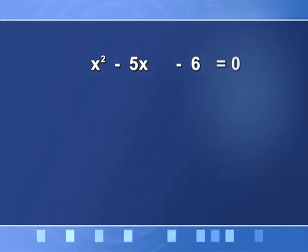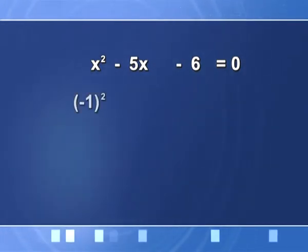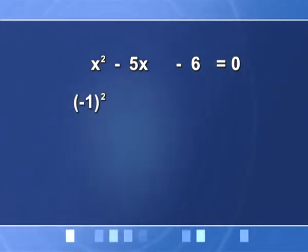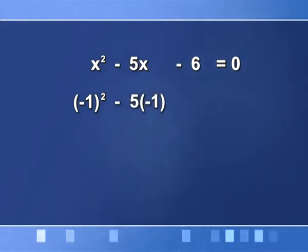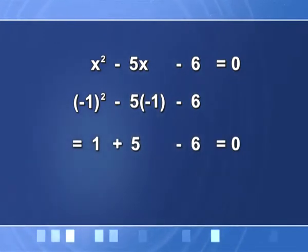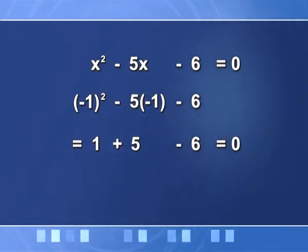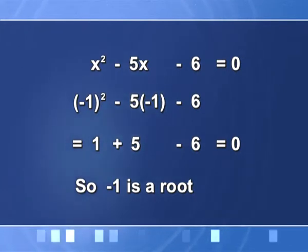Let us take an example: x² − 5x − 6 = 0. I give value −1 to x. I get (−1)² − 5×(−1) − 6, which on simplification gives me 0. So whenever the left hand side becomes 0 for some value of x, that will be the root of the equation. Therefore, −1 is the root of this quadratic equation.